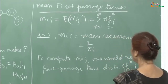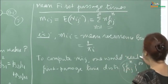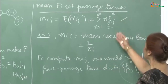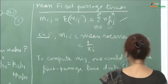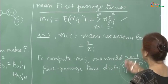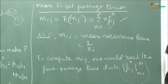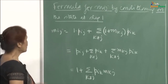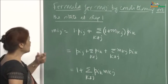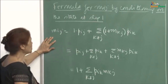To compute m_ij you would need the first passage time distribution, so you need to compute all f_ij(n). You cannot apply this formula directly. Again, we will look at a nicer way of computing mean recurrence and mean first passage times. As we said, computing m_ij by the formula requiring all f_ij(n) up to infinity is not practical. So let us come up with another method.